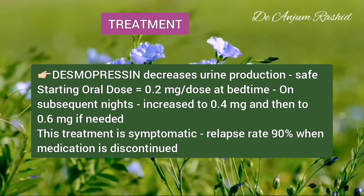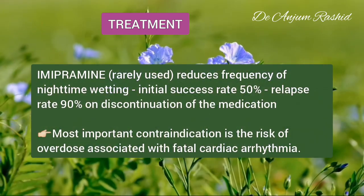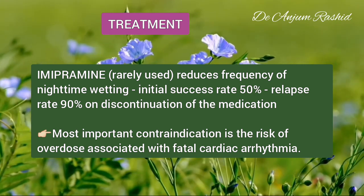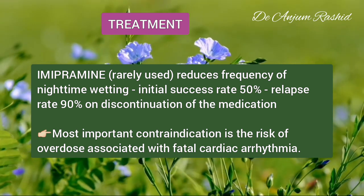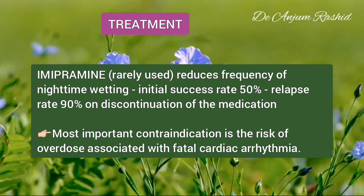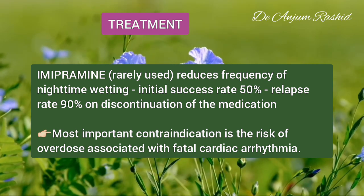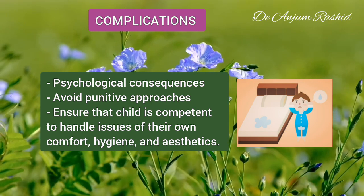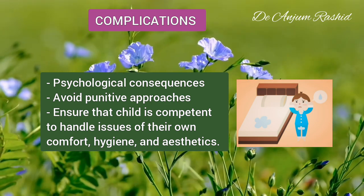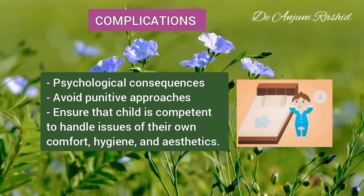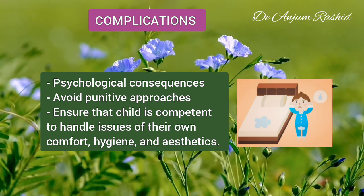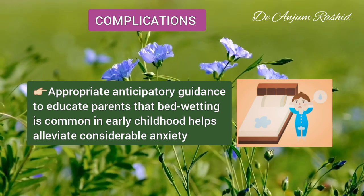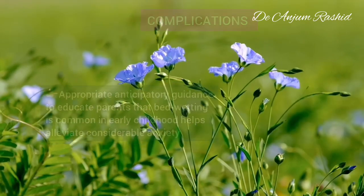Imipramine is rarely used for enuresis nowadays. It reduces the frequency of nighttime wetting, with an initial success rate of 50 percent, but it is effective during treatment only and has a relapse rate of 90 percent on discontinuation. The most important contraindication of imipramine is the risk of overdose, which is associated with fatal cardiac arrhythmias. Regarding complications of enuresis, the psychological consequences can be severe. Families can minimize the impact on the child's self-esteem by avoiding punitive approaches and ensuring the child is competent to handle issues of their own comfort, hygiene, and aesthetics. Appropriate anticipatory guidance to educate parents that bedwetting is common in early childhood helps alleviate considerable anxiety.